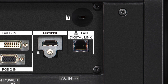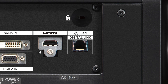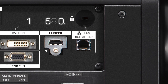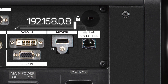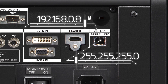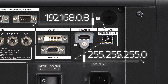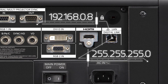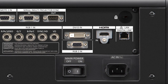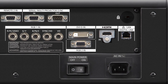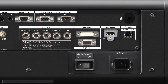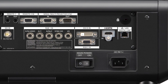Establish a network with your projector. The default IP address for any Panasonic projector is 192.168.0.8 with a subnet of 255.255.255.0. In the case of multiple units, remember that each projector in your network must have a unique IP address, and this should be changed prior to physically connecting the projector to the network.